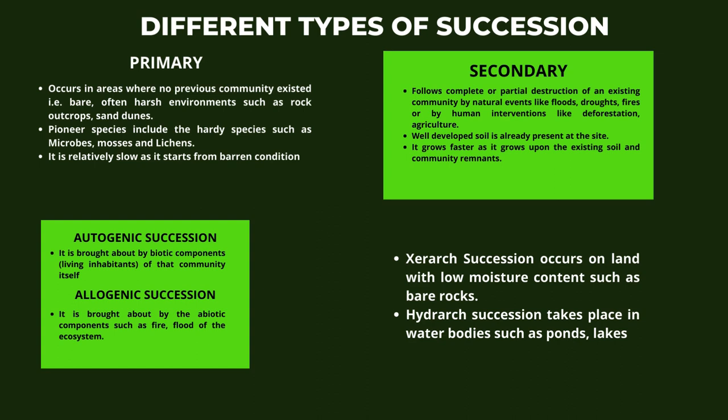Secondary succession is where it follows complete or partial destruction of an existing community by natural events like floods, droughts, and fires, or by human interventions like deforestation and agriculture. Well-developed soil is already present at the site, and it grows faster as it builds upon the existing soil and community remnants.